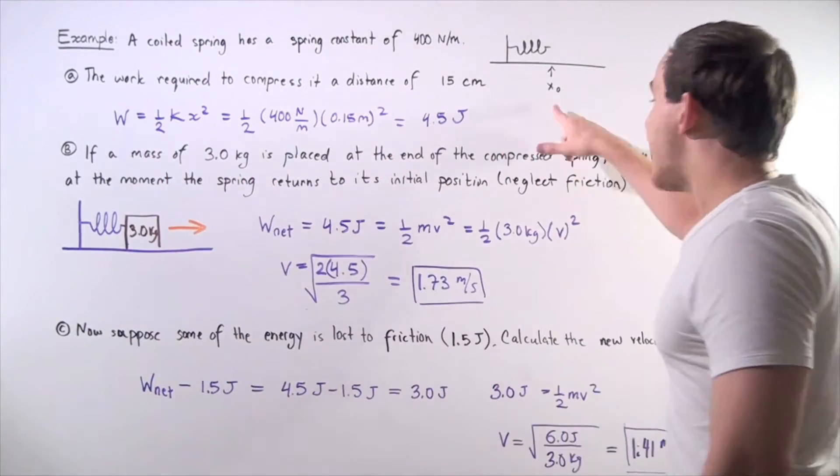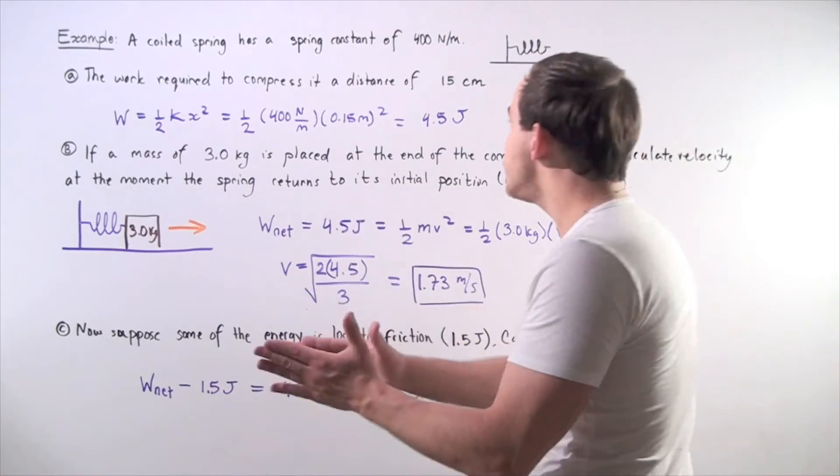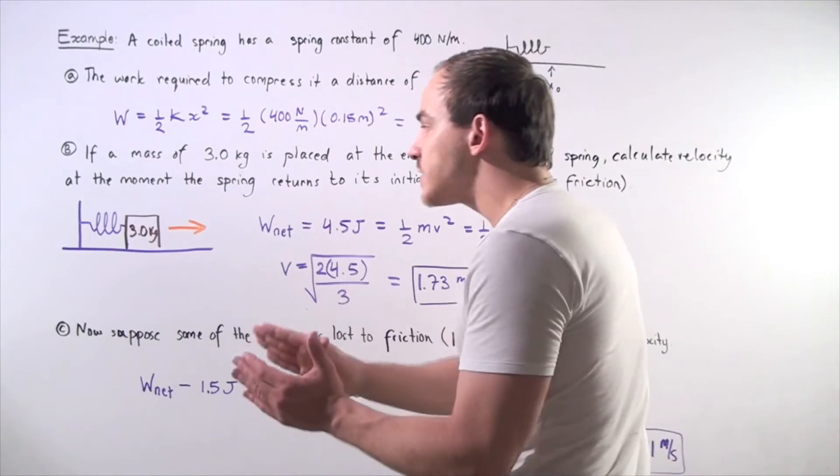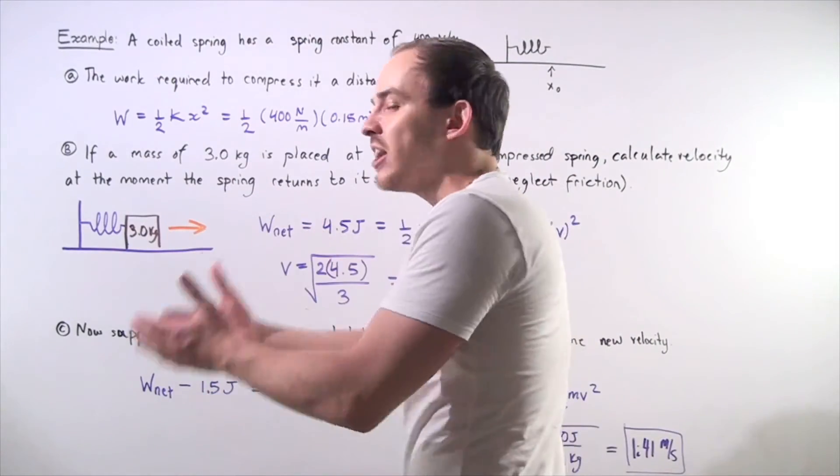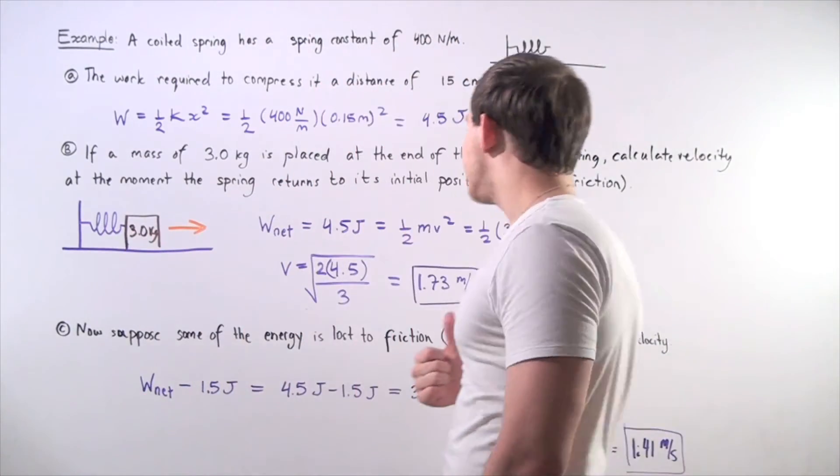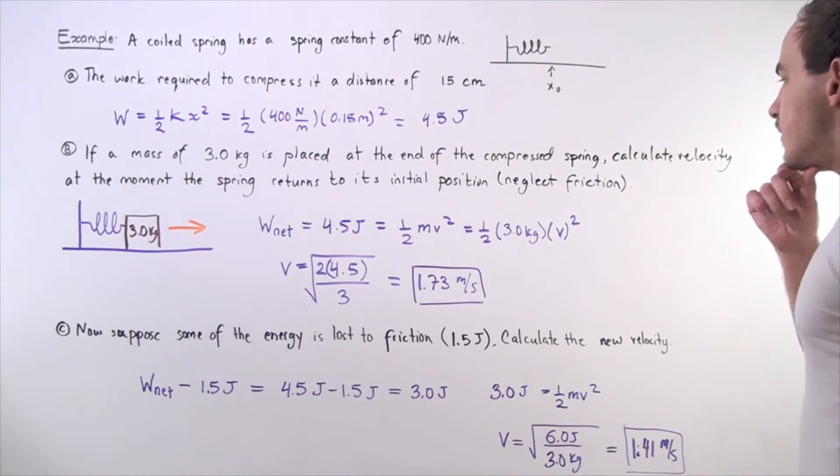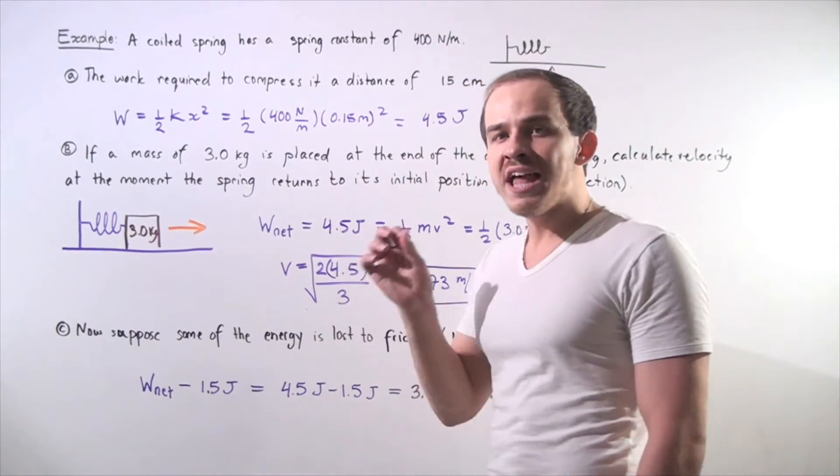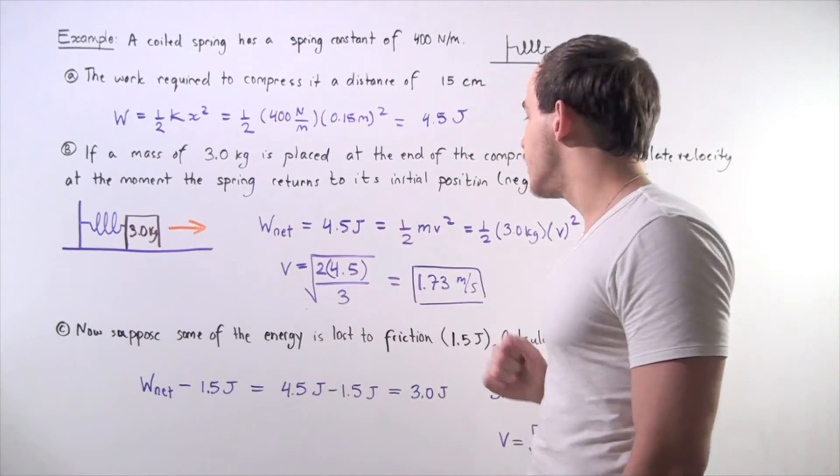At our position of x naught, all the energy, all 4.5 joules of energy will be transferred into the block, accelerating the block to some velocity. To find the velocity, recall the formula for kinetic energy, one-half times mass times velocity squared.